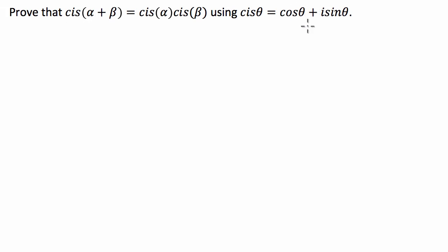At the beginning, we're going to let α + β equal the θ term in this trigonometric identity. So let θ = α + β. Because of this, we're going to substitute that in. Therefore, cis(α + β) equals cos(α + β) plus i times sin(α + β).